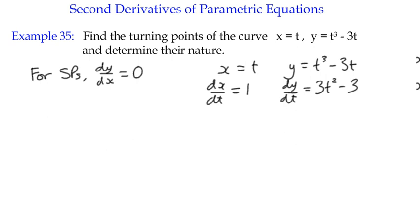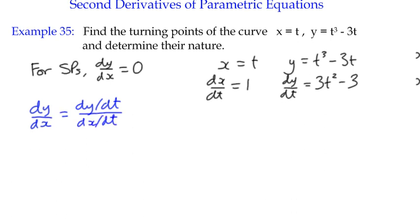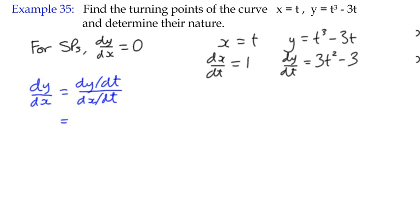So dy/dx can be conveniently expressed in this form: dy/dt divided by dx/dt. dy/dt is 3t² - 3 over 1, which means that we can just leave it as 3t² - 3.